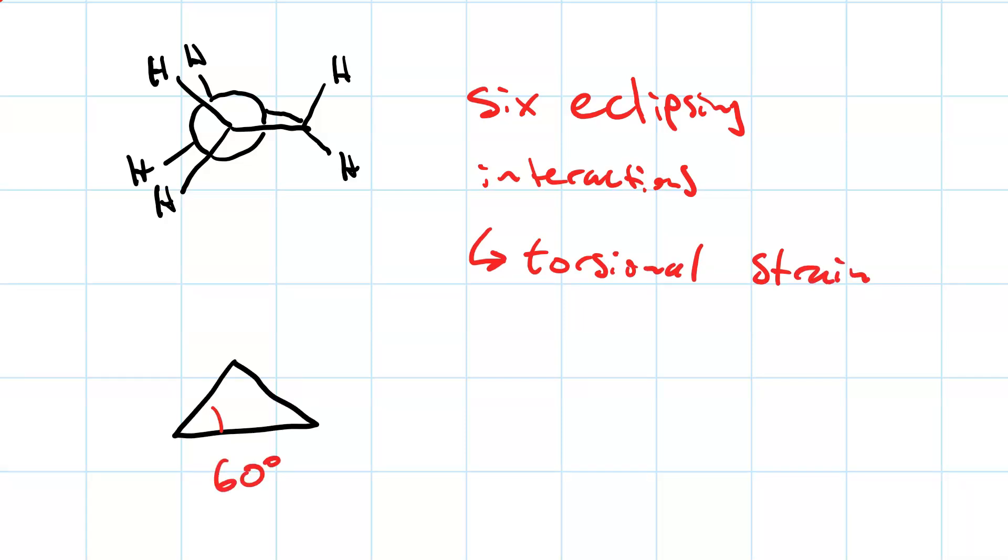The bond angles in cyclopropane are all 60 degrees, which deviates significantly from the ideal bond angle of 109.5 degrees. We call this angle strain.